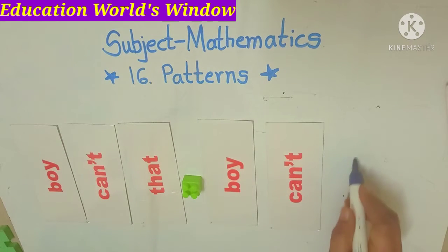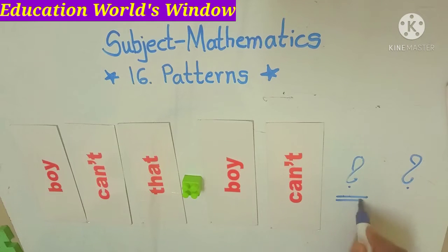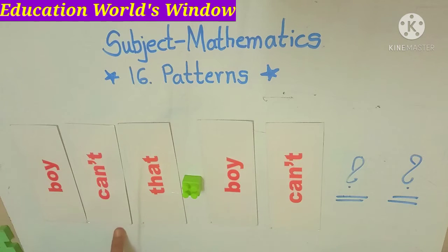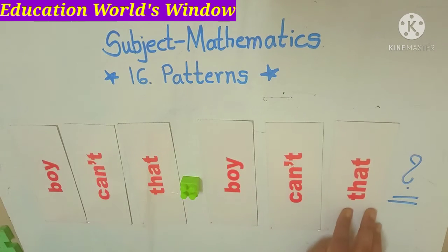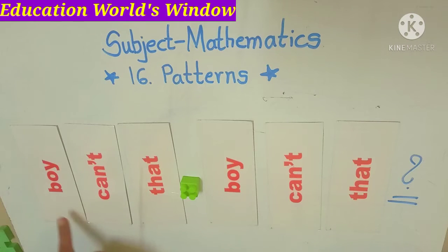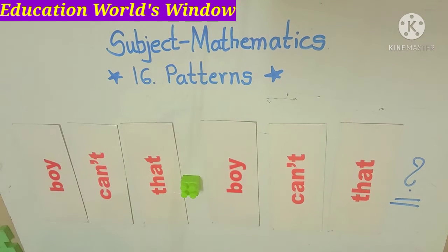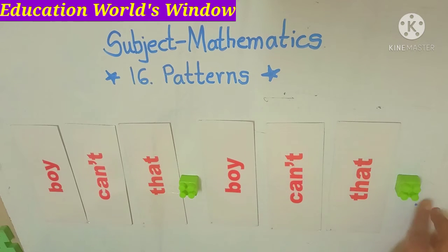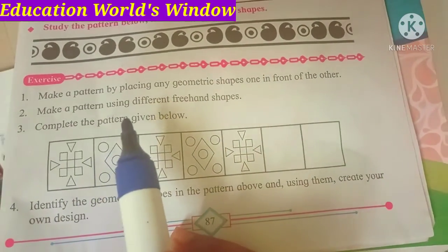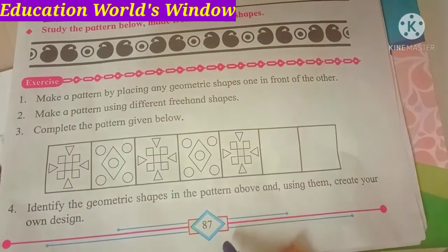In this room we have two questions — one and two. Let's show you how the questions are. Now we have to observe this. We will do an exercise which is on page number 87.